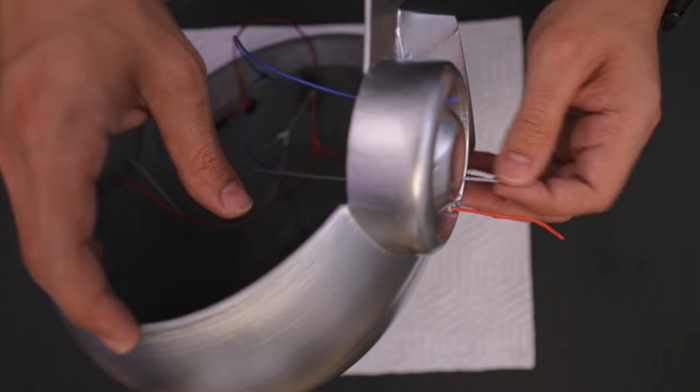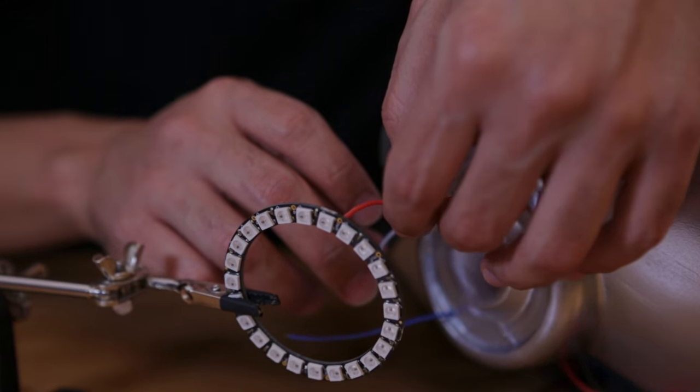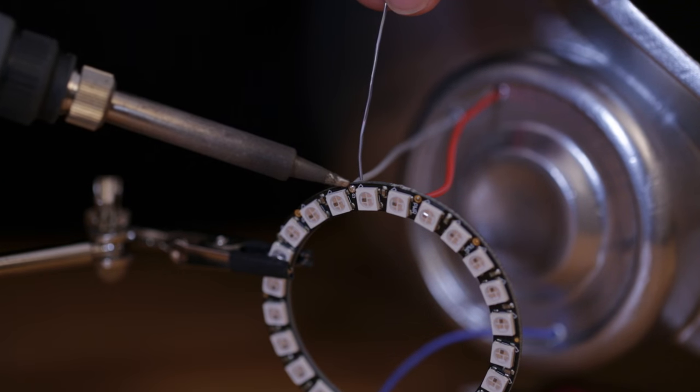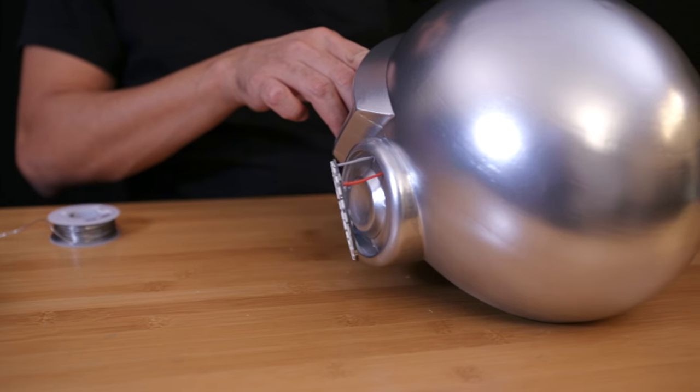We'll then string each wire through the holes from the inside and use a third helping hand to hold the NeoPixel rings in place while we solder each connection. Once we're all wired up we can carefully route those wires to the back of the helmet.